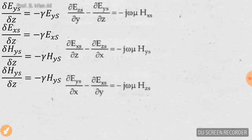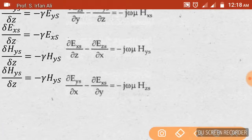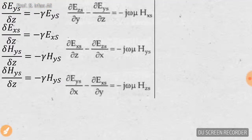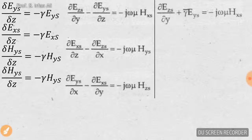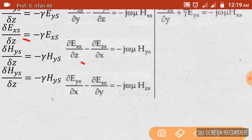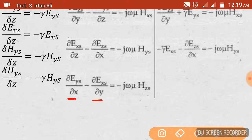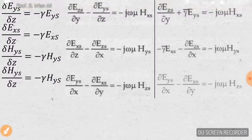These are the three equations from Maxwell's second equation. Substituting the wave solutions where del/dz terms appear: for the first equation containing Eys, substituting gives the updated relation; for the second containing Exs, the substitution gives its corresponding form. The third equation has only del/dx and del/dy terms and remains unchanged.